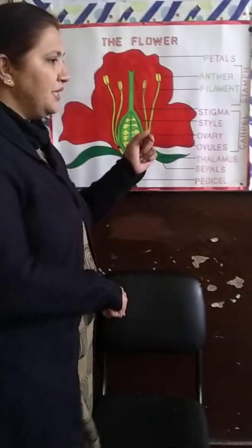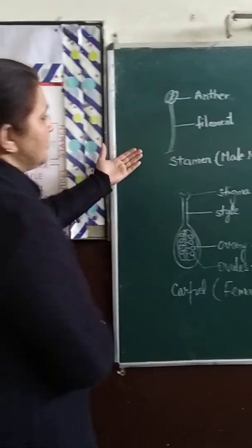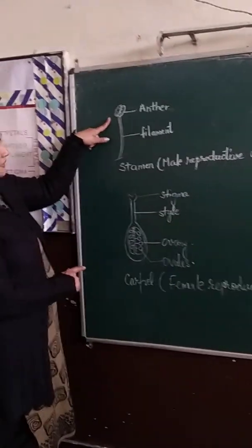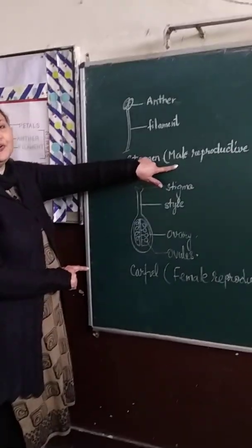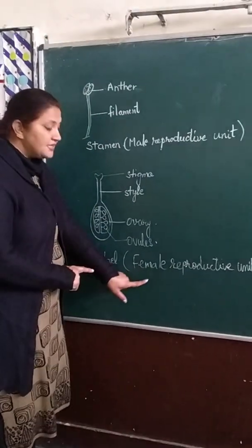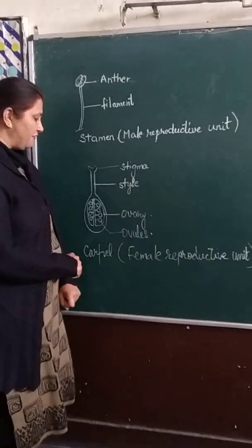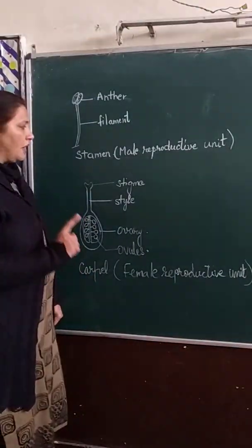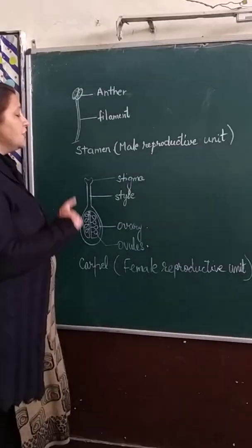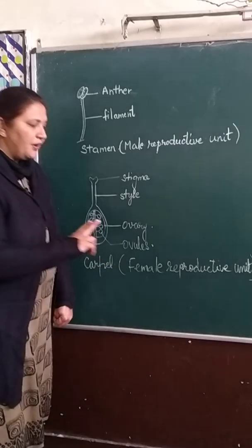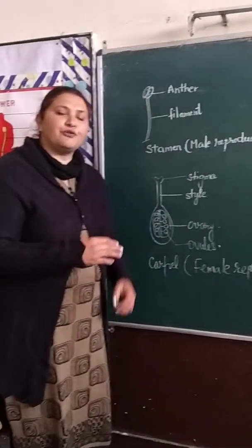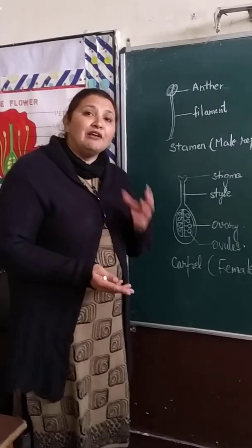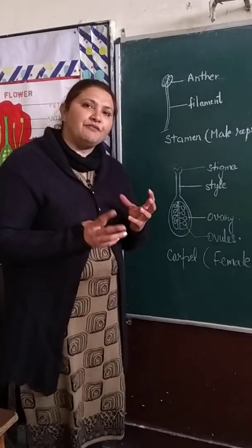If I explain in detail: the stamen is the male reproductive unit of the flower and the carpel is the female reproductive unit of the flower. The male and female reproductive units of the flower are used for producing fruit and seeds for further perpetuation of the flower. The flower is actually the reproductive unit.